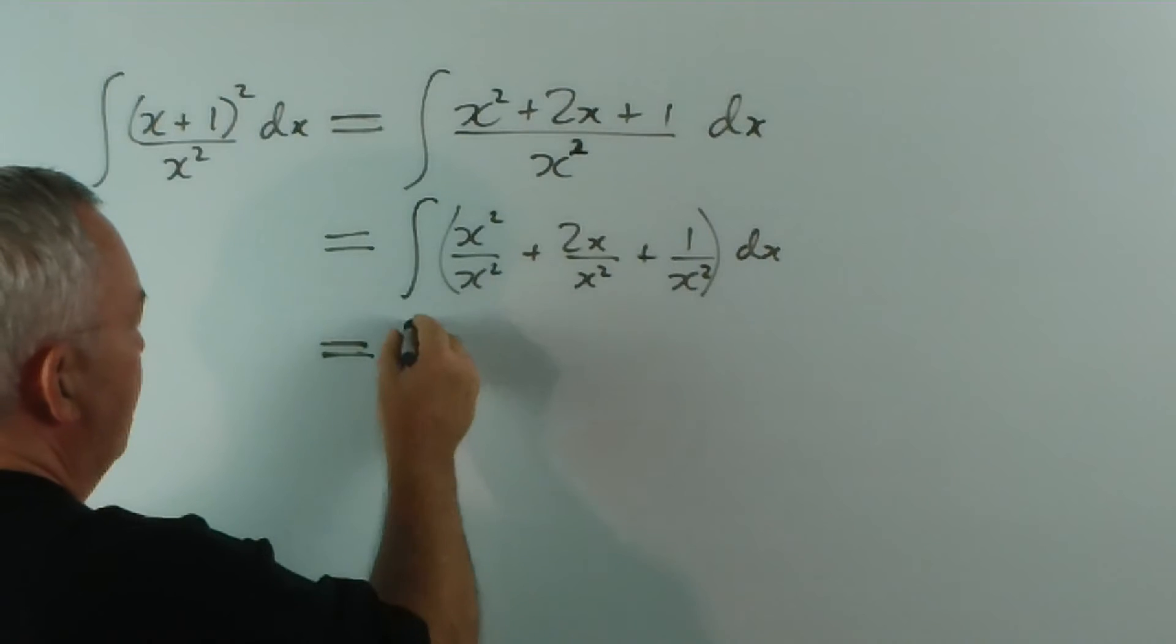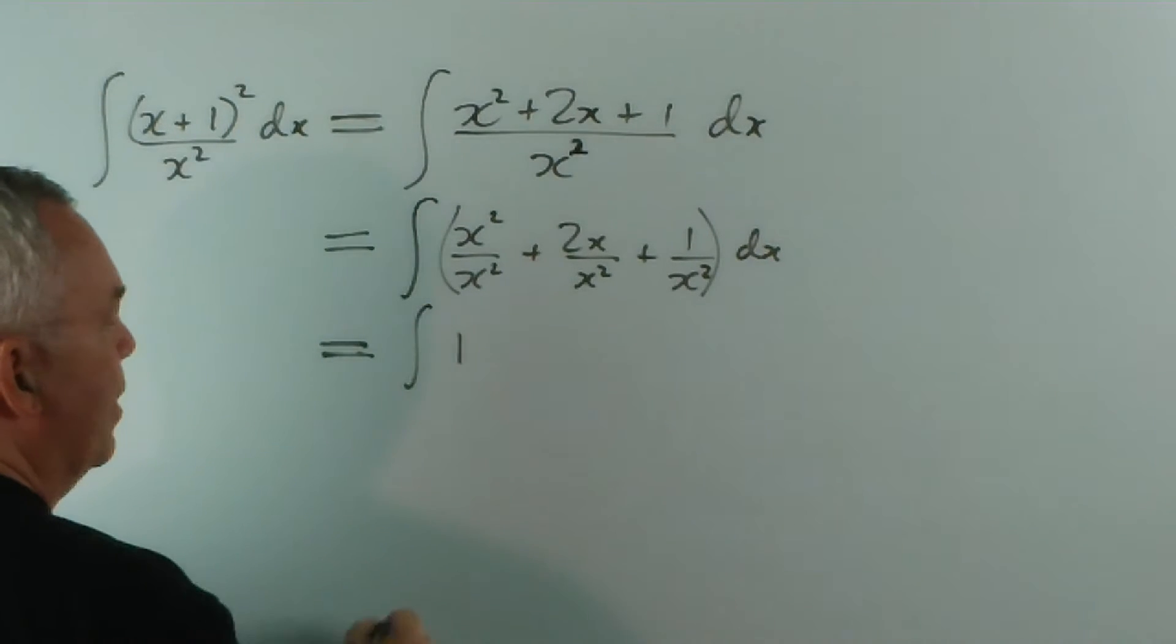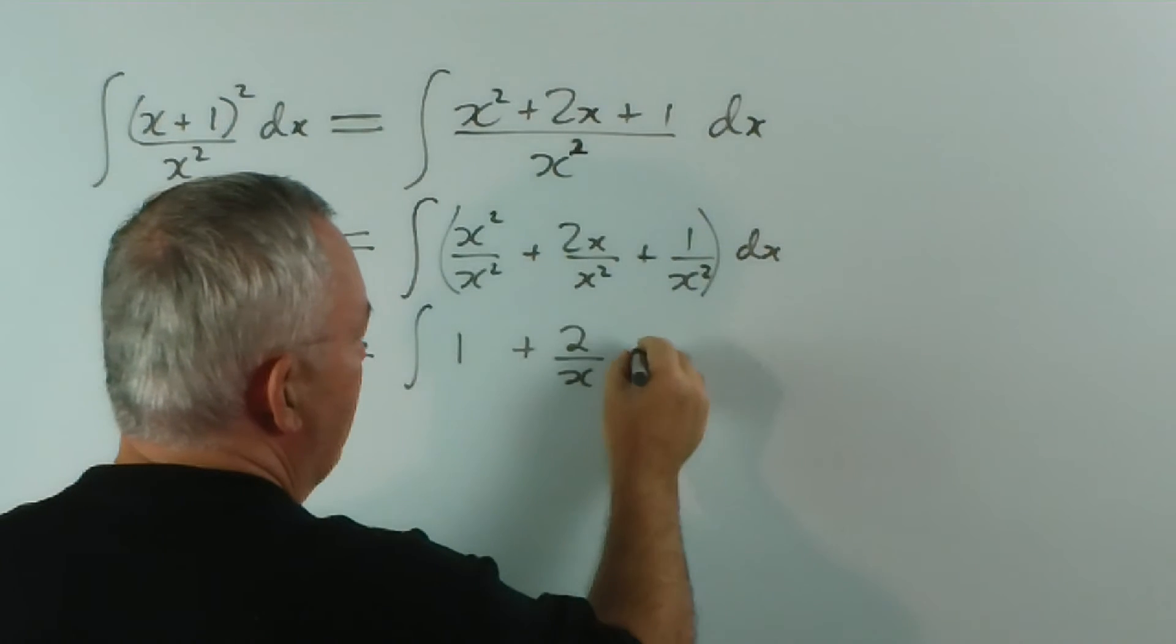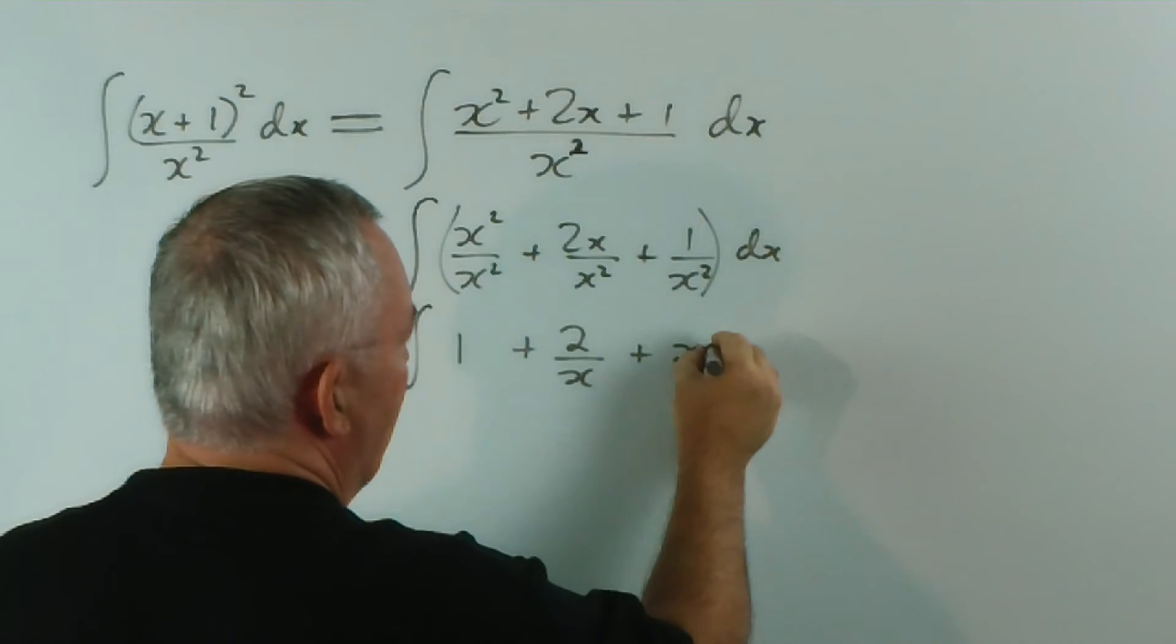Now, this is very simple. This is the integral of 1. This is the integral of 2 over x. And this one I'm going to write as x to the minus 2.